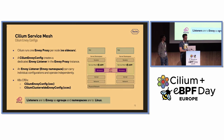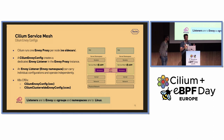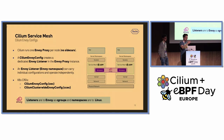Cilium runs one unique Envoy proxy instance per Kubernetes cluster node — no sidecars. When you create a Cilium Envoy config, it creates an Envoy listener in that particular Envoy proxy instance. An Envoy listener, also called an Envoy namespace, can carry individual configurations and operate independently. Put simply, Envoy listeners are to Envoy as cgroups and namespaces are to Linux. There are two CRDs: the namespace resource and the Cilium cluster-wide Envoy config, which is applied to the whole cluster.